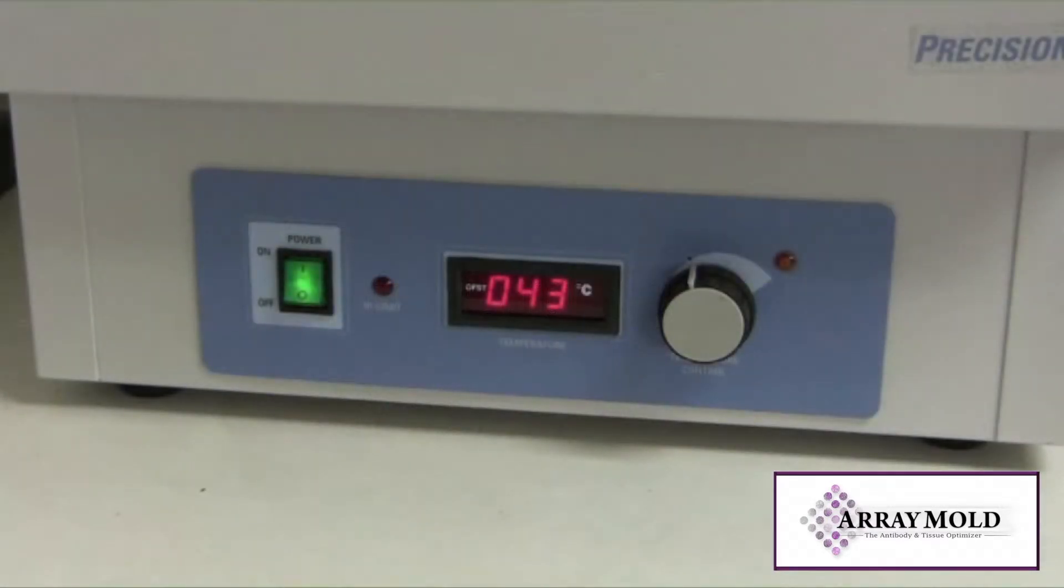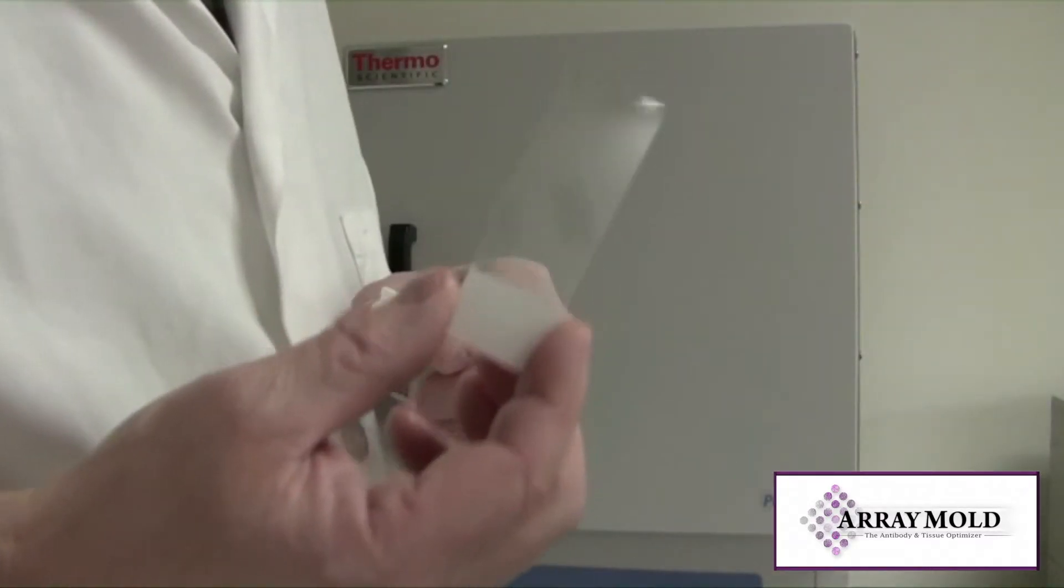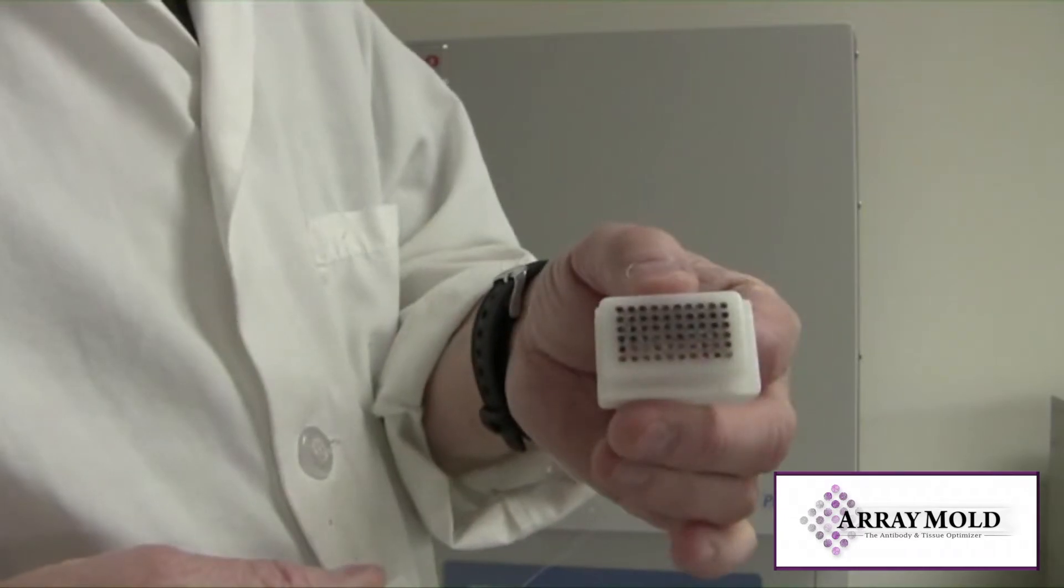Warm an oven to around 43 degrees Celsius. Place the array block on a glass slide face down. It doesn't matter if it's a charged or non-charged slide.